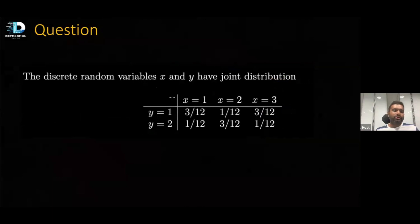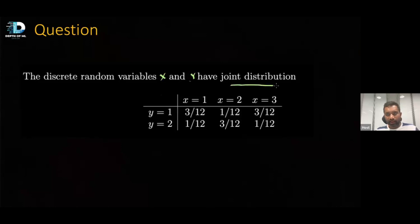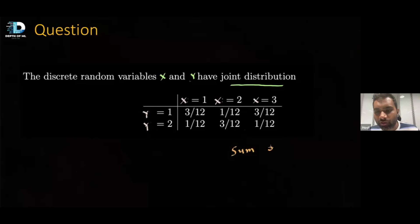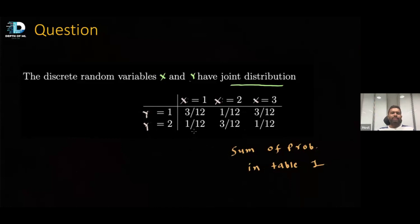In this question I should write the random variable as a capital letter. You can ask many questions from this joint distribution. Note that in the question it is explicitly provided as a joint distribution. The table can be given in many forms — marginal or conditional. From the joint distribution, can we obtain the marginal distribution? Note that the sum of the probabilities in the joint distribution will be one. Can we write the marginal distribution for Y=1 and Y=2? The marginal is simply the sum of all elements using the law of total probability.